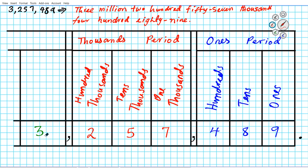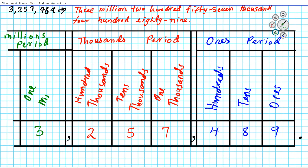Now the last one — we just have one digit in the next period, which is the millions period. So our table only shows one column for it. The last period is the millions period. We have: one millions place, hundred thousands, ten thousands, one thousands, hundreds, tens, ones. And right here is our decimal point — that's our reference point.